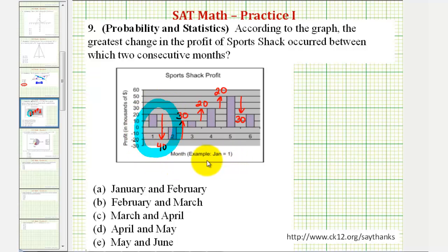Based upon the legend, since January equals one and February equals two, the greatest change in profit occurred between January and February, which would be A.